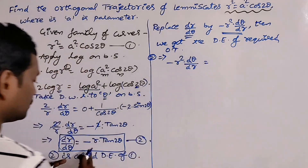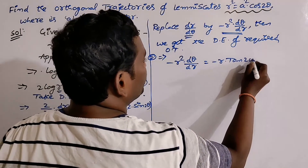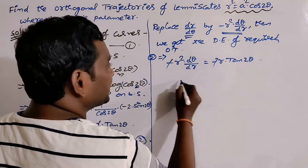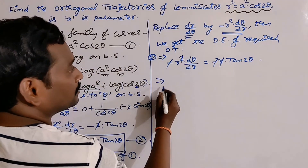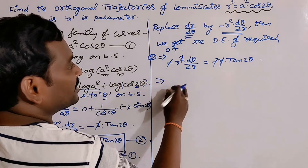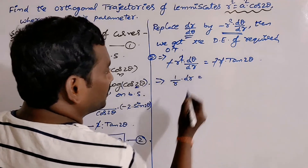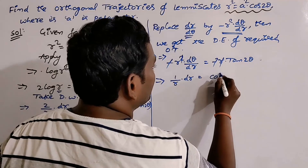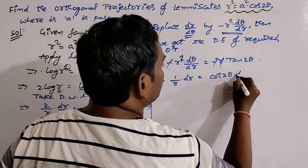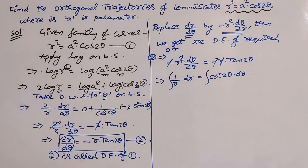In equation (1) we had dr/dθ = -r·tan2θ on the left hand side. After the replacement, the negatives cancel and one factor of r cancels, so separating variables gives: (1/r)·dr = cot2θ·dθ.